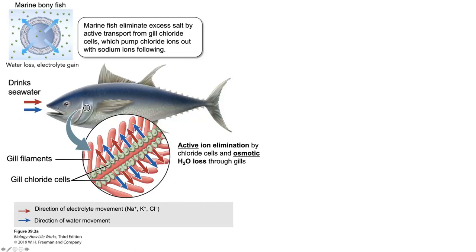Because they have all this constant water loss occurring in a hypertonic environment, they need to drink and intake as much water as possible — so they drink lots of seawater. But seawater also has a lot of salt in it, so they've got to eliminate all the salts they take in. They'll drink seawater, which flows through their mouths and out the gill slits over their gills. The gills are where they absorb water, but they're also eliminating a ton of salts through the gill chloride cells, which actively pump chloride ions out of the fish. In that process, they're also osmotically losing water, so they have a constant fight of taking in enough water to balance all the osmotic water loss.